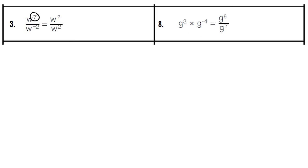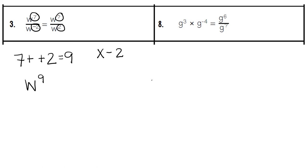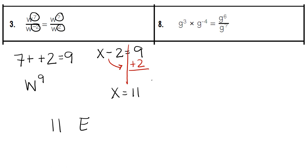For number 3, we start by subtracting our exponents because it's a division problem — we subtract 7 minus negative 2. Subtracting a negative is not possible as written, so we change it from minus and a negative to a positive plus. 7 plus 2 gives us 9, meaning we have w to the 9th power as our final answer. On the other side, we're also dividing, so we subtract: the unknown exponent minus 2 also needs to equal 9. We do the opposite and add 2: 9 plus 2 is 11. Our missing exponent is 11, represented by the letter E at the bottom.